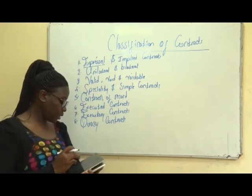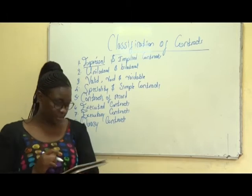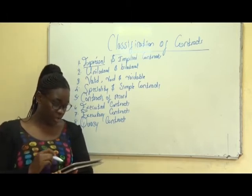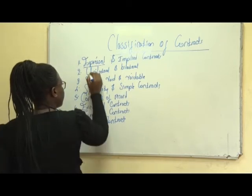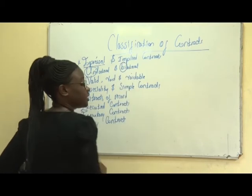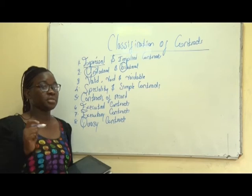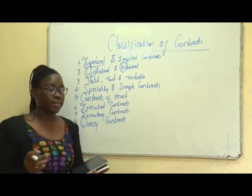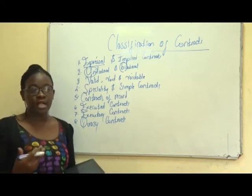Number two, we look at unilateral and bilateral contracts. A unilateral contract is one in which only one party is bound — when you talk of 'uni,' it means one party. Bilateral means both parties are bound. Meaning in a unilateral contract, there is only one person that has the upper hand, whereas in a bilateral contract, both parties have the upper hand and are able to express themselves willingly.